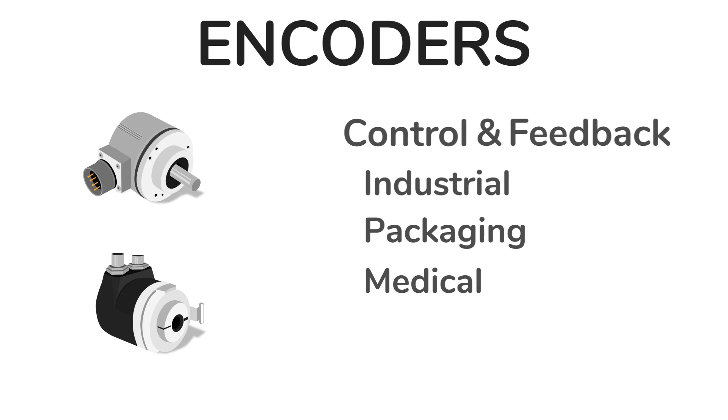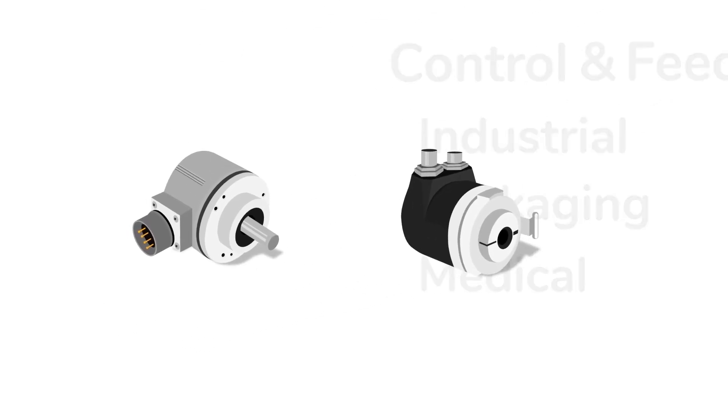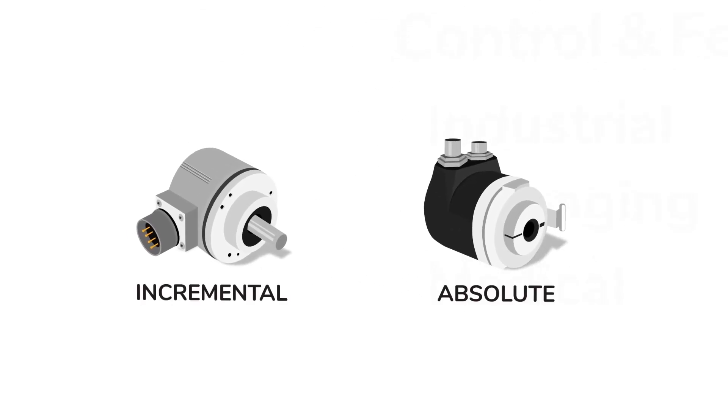The primary way to classify encoders is by their output type, incremental or absolute, and when making a purchasing decision, it is important to understand the key differences between them.